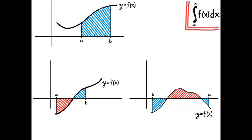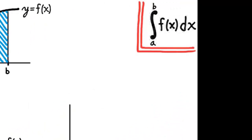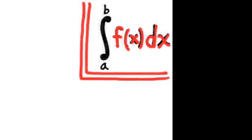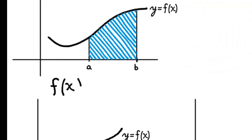Anything that is below the x-axis represents a positive contribution, and anything above the x-axis represents a negative contribution, when integrating from right to left. This makes sense if you go back to thinking about the Riemann sum. It all comes down to the terms in the Riemann sum: f of x times dx. The terms are actually of the form f of x times delta x, and then we take a limit as delta x goes to 0, adding up a bunch of those terms.